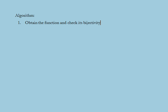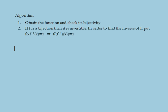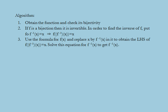Next we discuss the algorithm for finding the inverse of a function. Step one: obtain the function and check its bijectivity — if f is a bijection, it is invertible. Step two: put the composite f ∘ f⁻¹(x) = x, which implies f(f⁻¹(x)) = x. Step three: use the formula for f(x), replace x by f⁻¹(x), and solve the resulting equation to obtain f⁻¹(x).